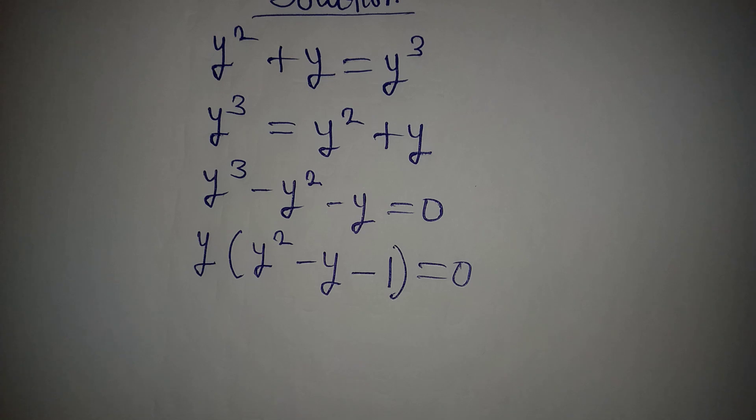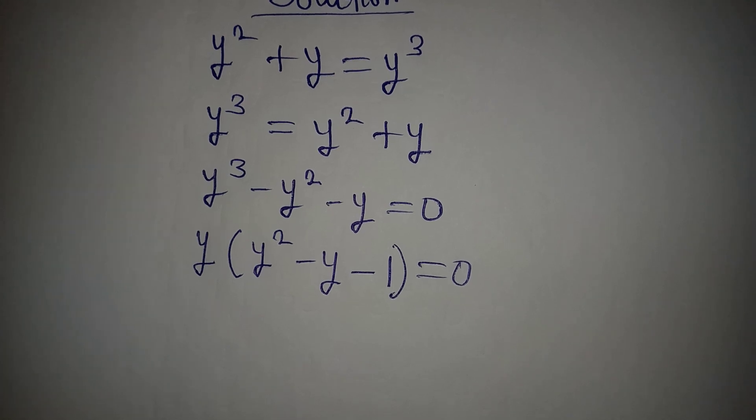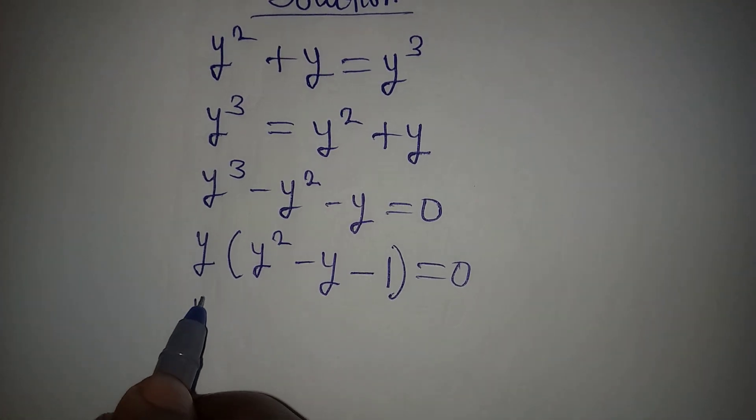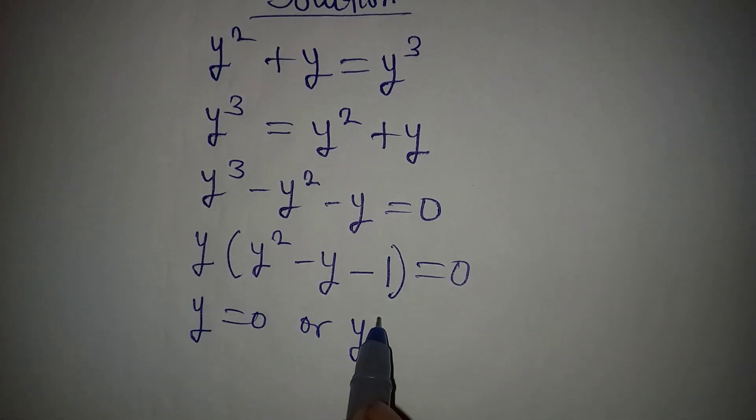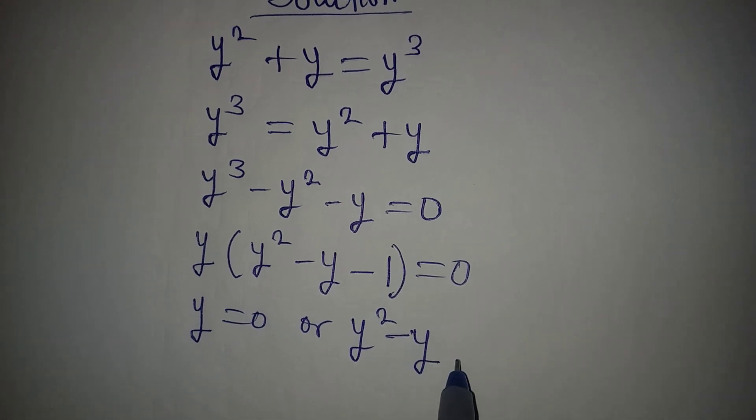From here we can apply our zero product rule, and that says that either y is equal to 0 or y squared minus y minus 1 is equal to 0.